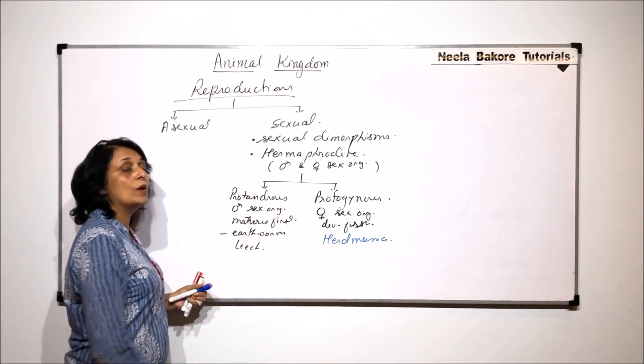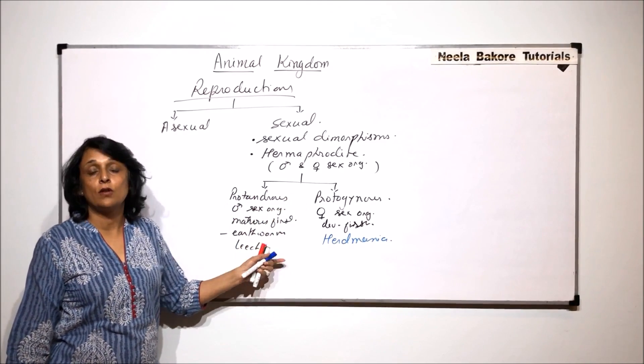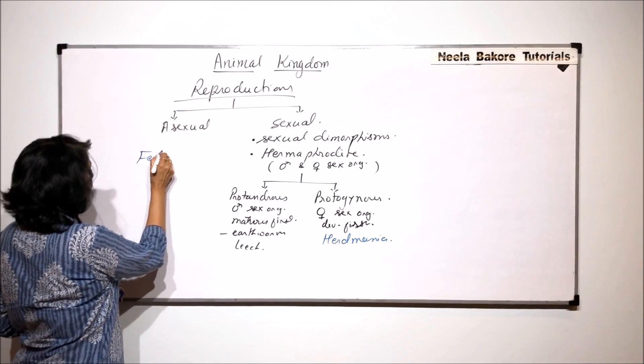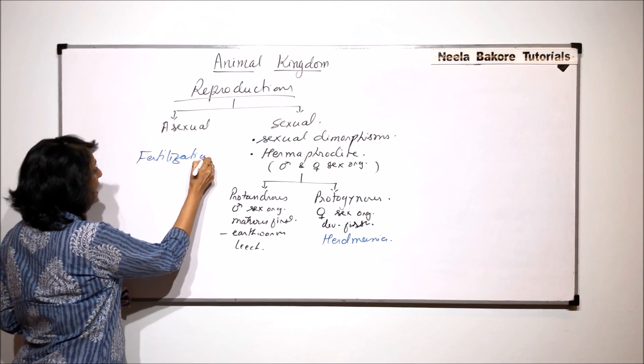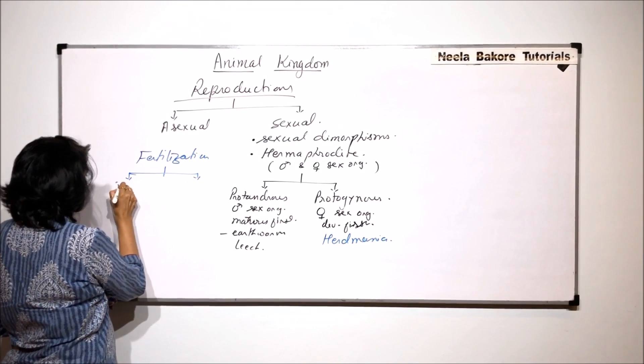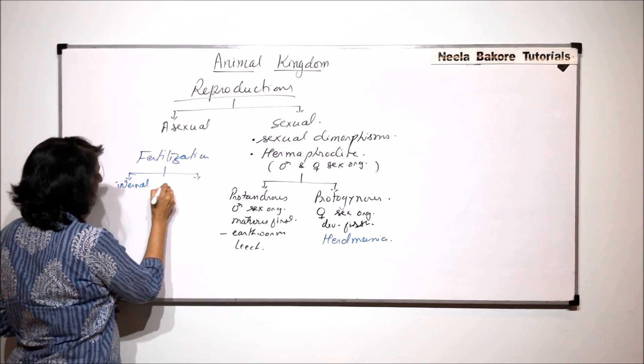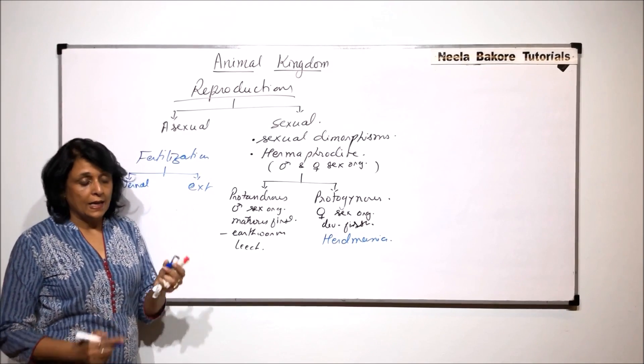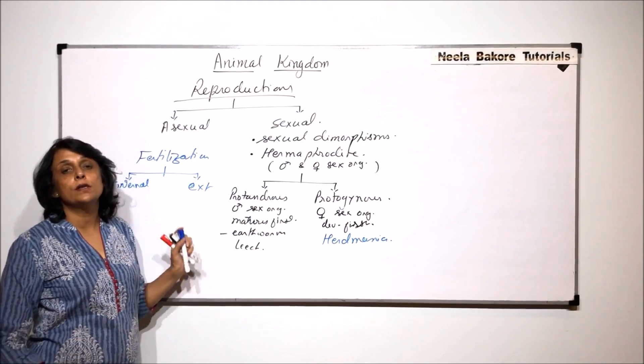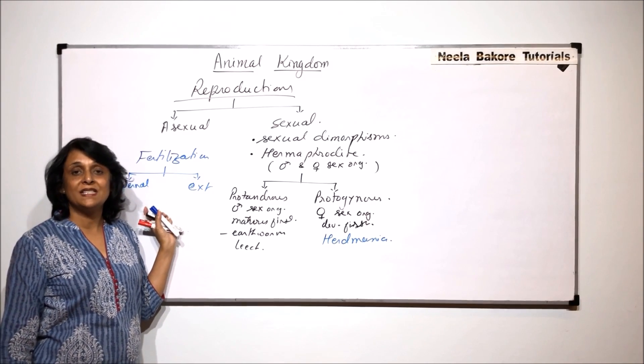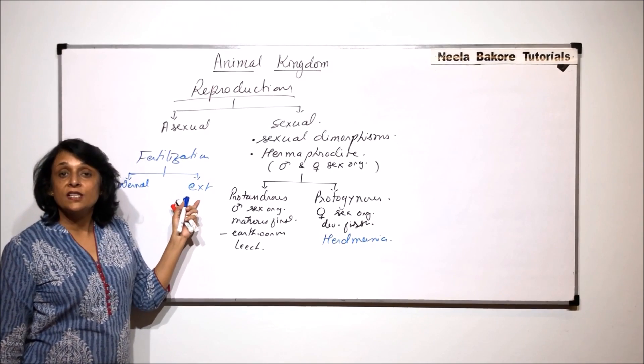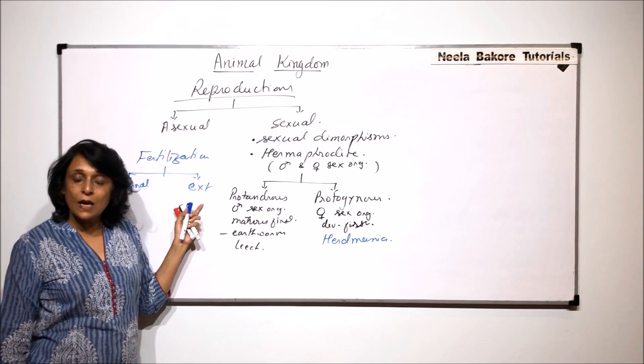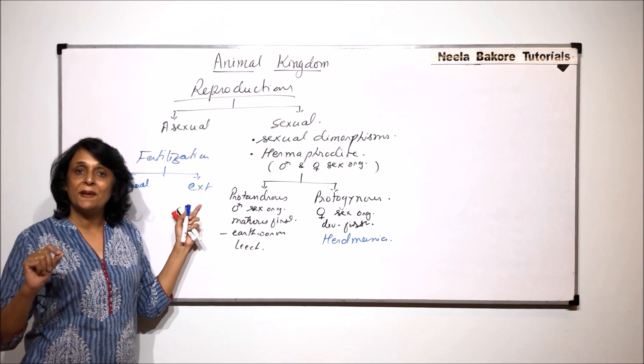Now fertilization can be internal or external. Internal means it takes place inside the body of the female. The male gametes are deposited in the body of the female and fusion of these gametes takes place inside the body. And in case of external, the male and the female gametes are released outside in the surrounding medium. And fertilization is going to take place there.